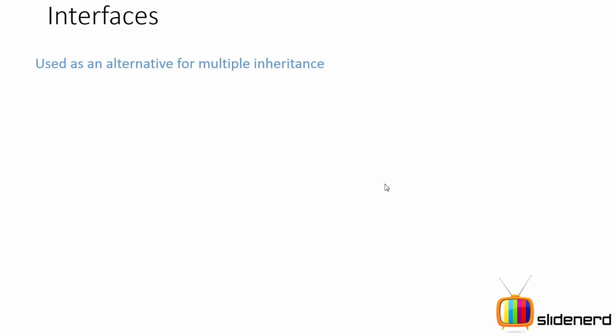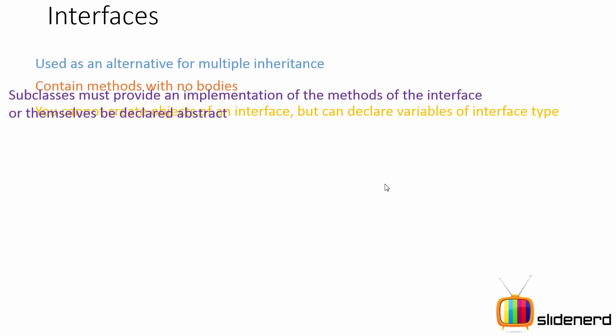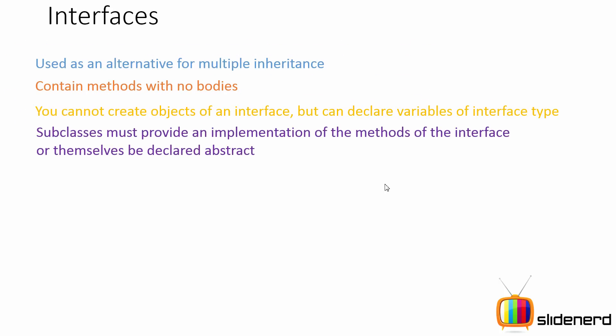Now let's talk about the rules and restrictions that apply to interfaces. First, interfaces can be considered equivalent to multiple inheritance, because in Java you can extend only one class but you can implement many interfaces. Interfaces contain methods with no bodies — you cannot have method definitions inside interfaces. You cannot create objects of an interface, but you can declare variables of interface type, which we'll look at when we discuss polymorphism.